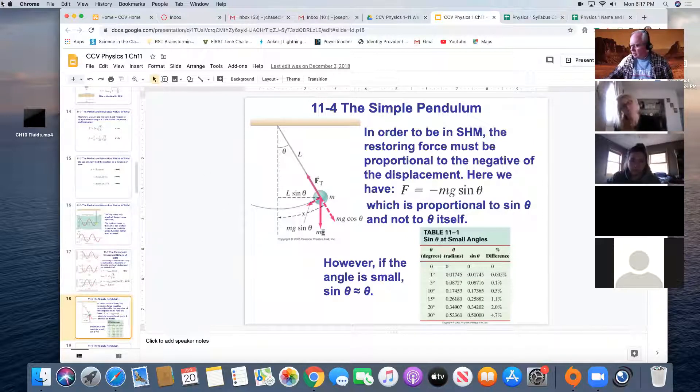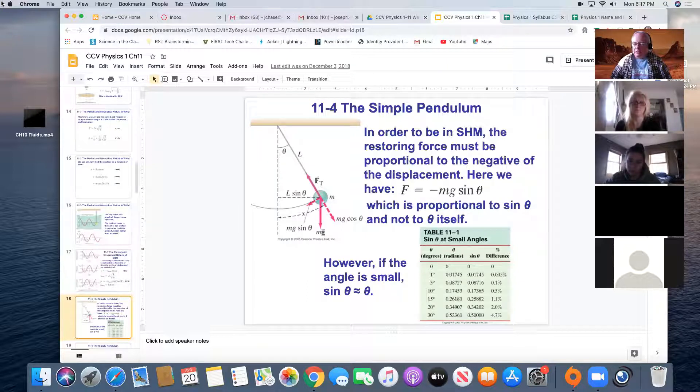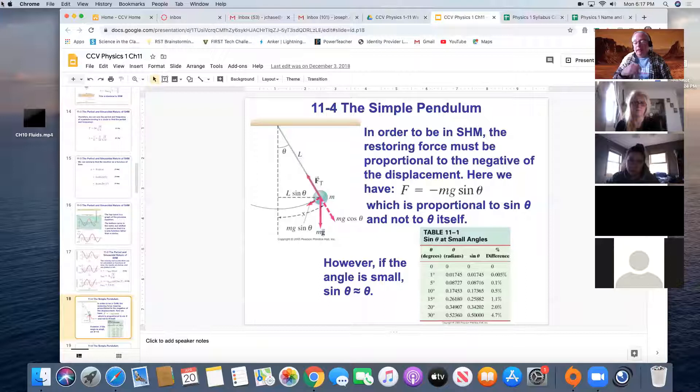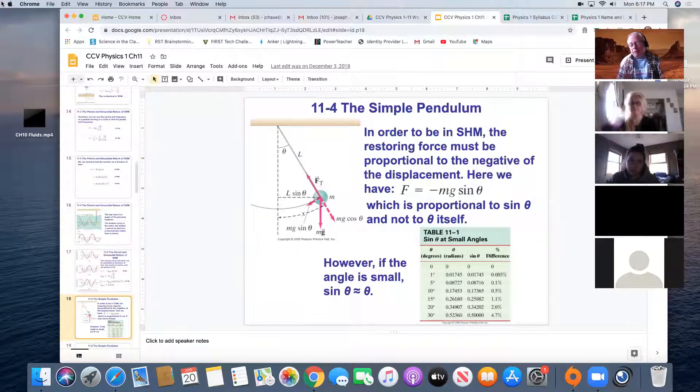If we use a small angle approximation, then it turns out that the period is going to be determined by the length of the pendulum, surprisingly, and not the angle and not the mass. So that's interesting. Why doesn't the mass make a difference? And the answer is because the force itself depends on the mass. And so if the force depends on the mass and then the force equals mass times acceleration, it's going to cancel on both sides.